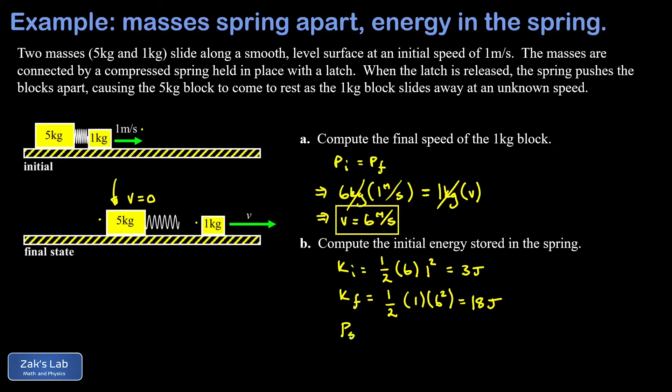We see an increase in the kinetic energy of the system that must have come from the initial spring potential energy in the compressed spring. That's responsible for the difference. There must have been 15 joules stored in the spring, and we're done.